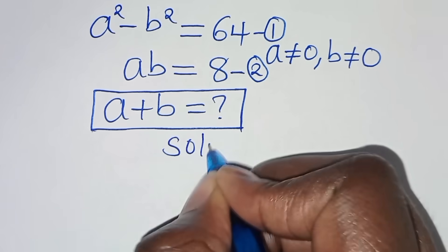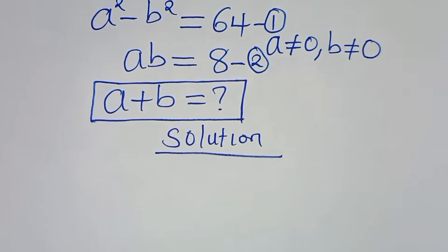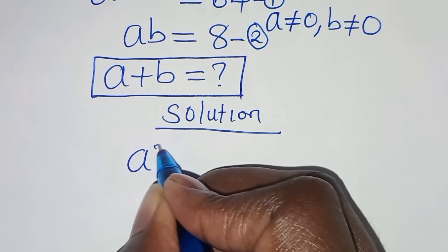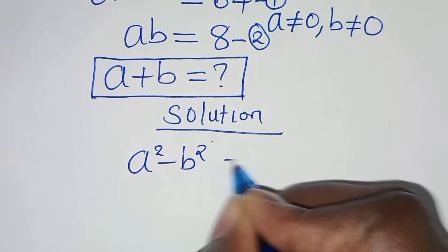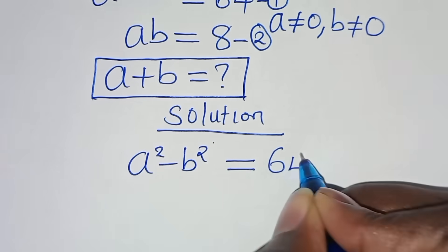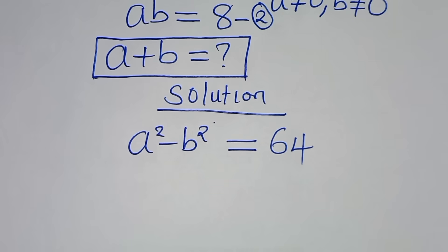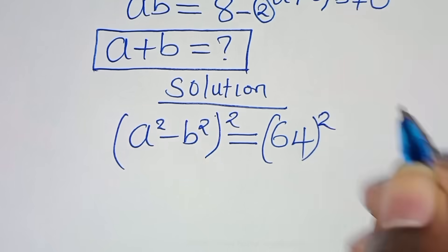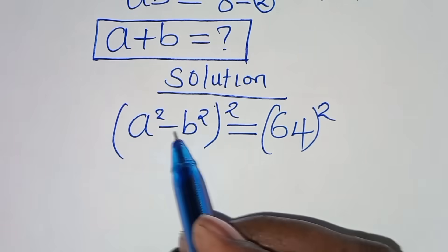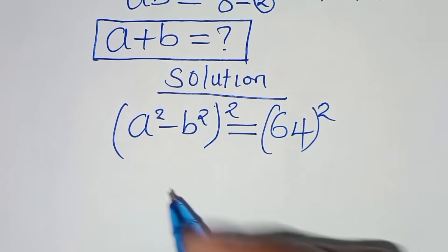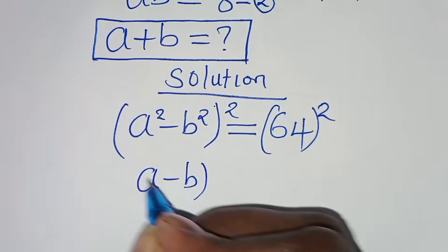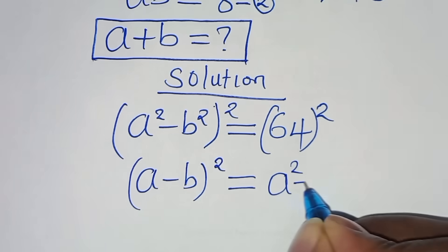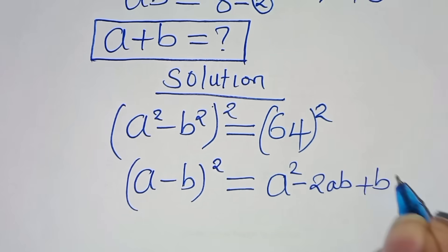Let's provide a solution. From equation 1, which is a squared minus b squared equals 64, the first step is to square both sides. Now a squared minus b squared, raised to the power of 2, is in the form of (a minus b) raised to the power of 2, which we can express as a squared minus 2ab plus b squared.